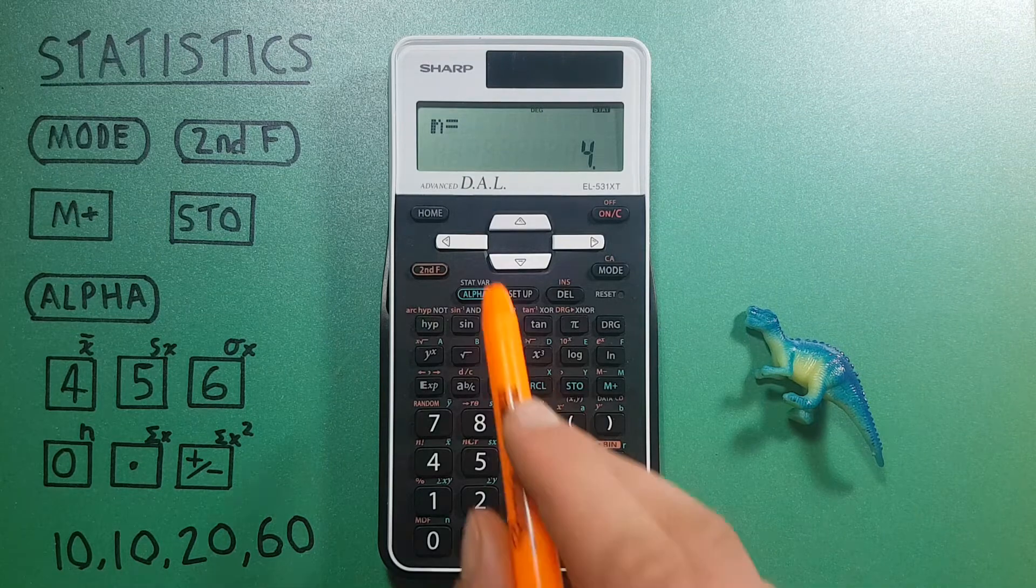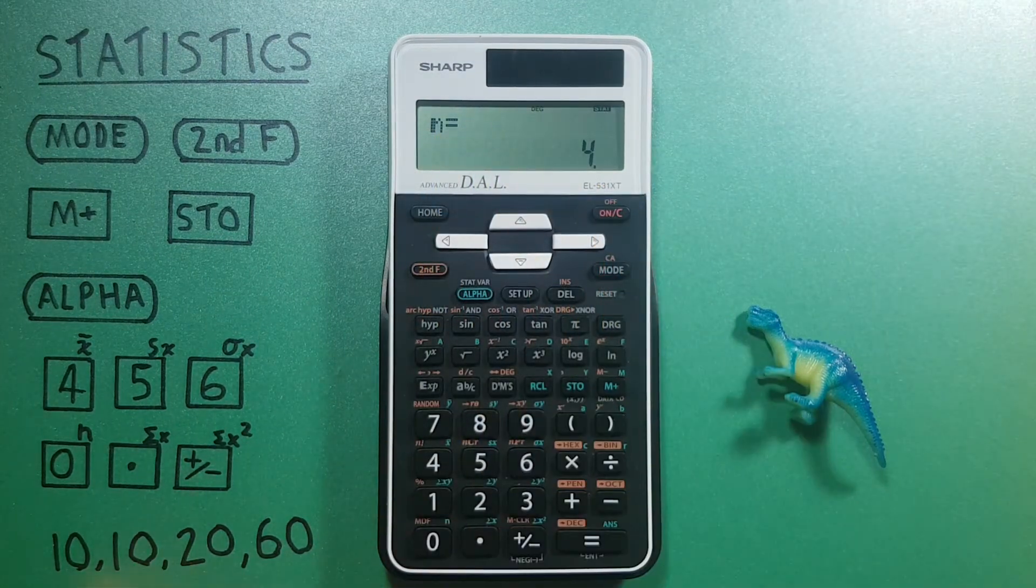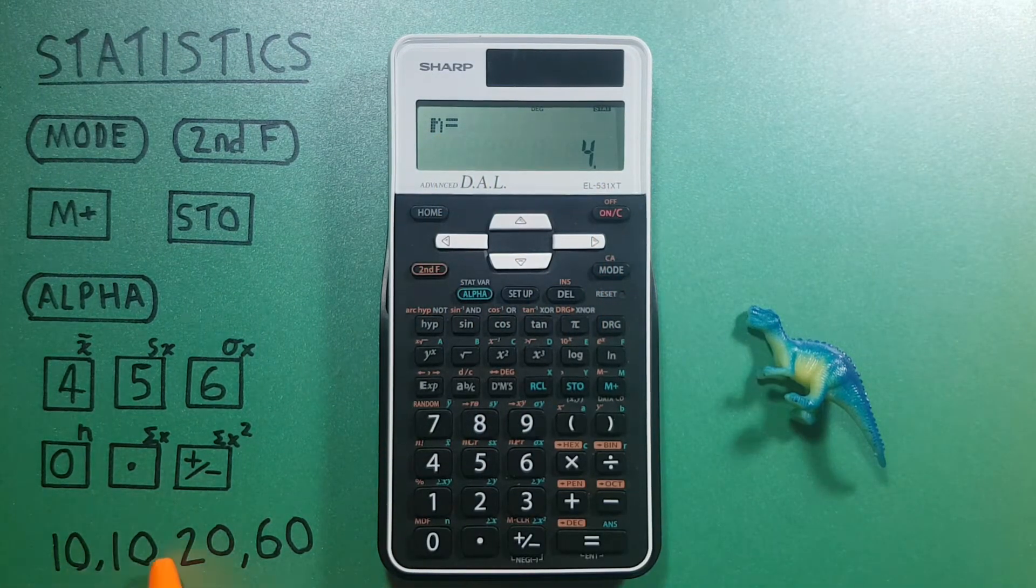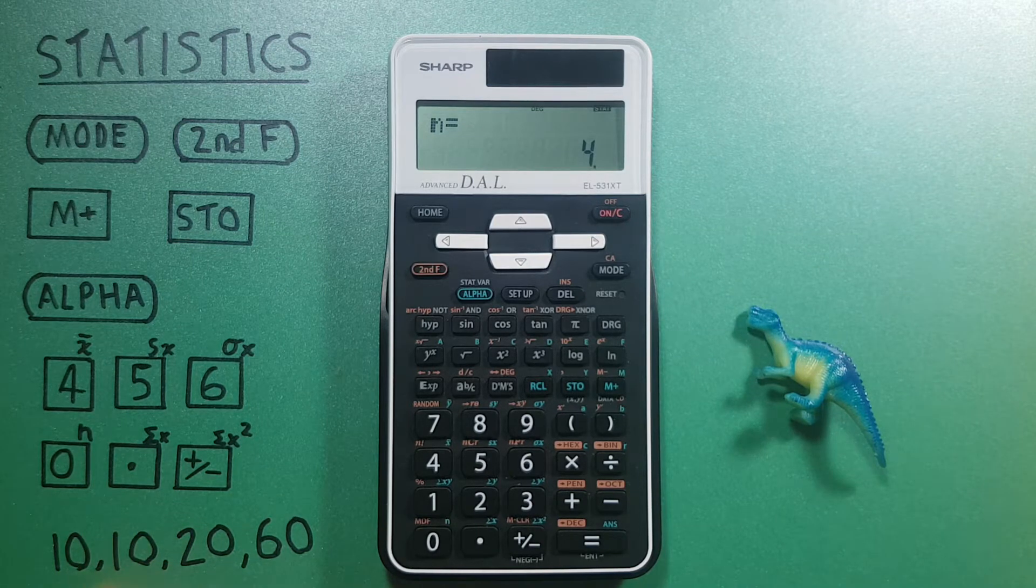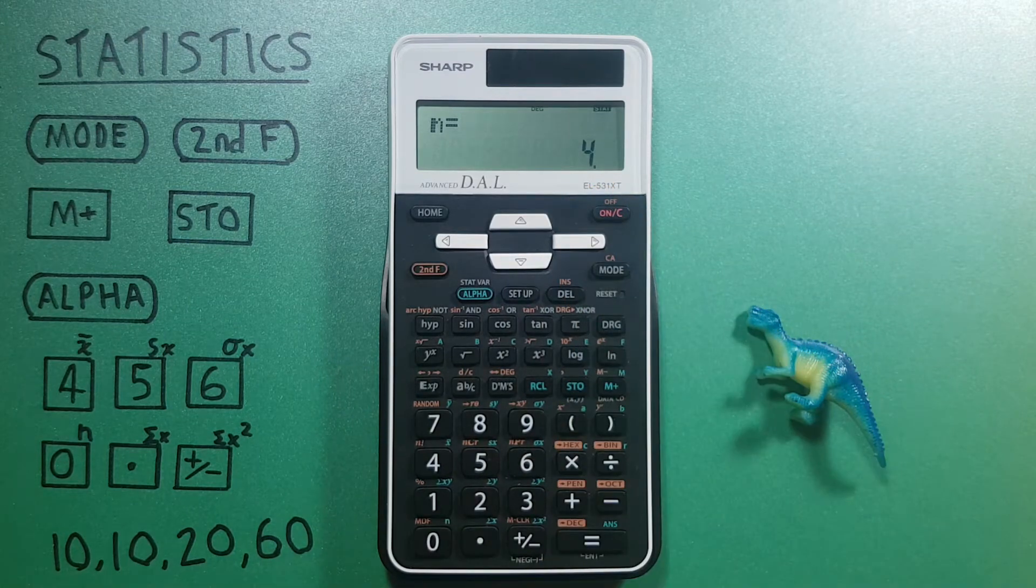N equals four. So we can confirm that since we have the frequency of two for this 10 and then one of the 20 and one of the 60, we have four pieces of data.